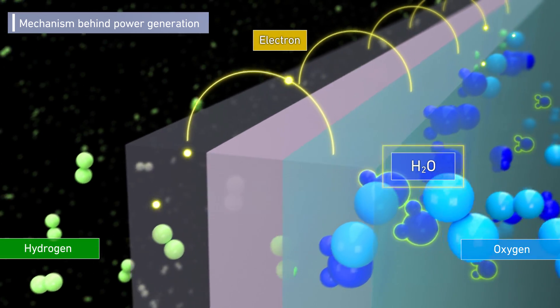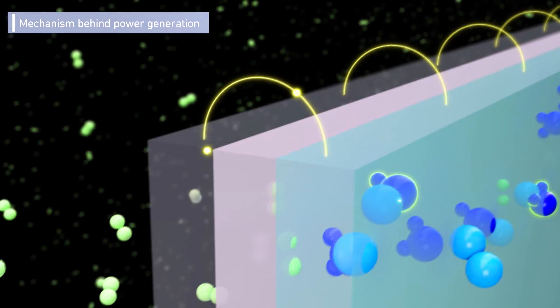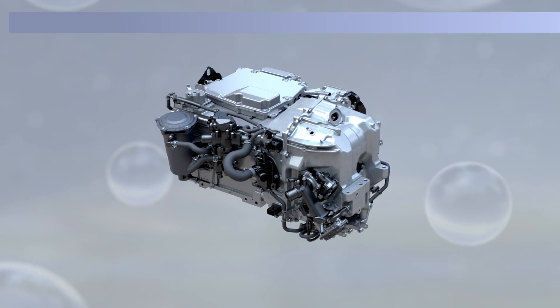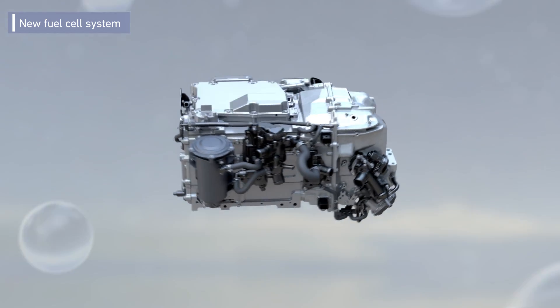Only water is emitted, but power generation efficiency drops in the area around the cell if the humidity is too high or too low.